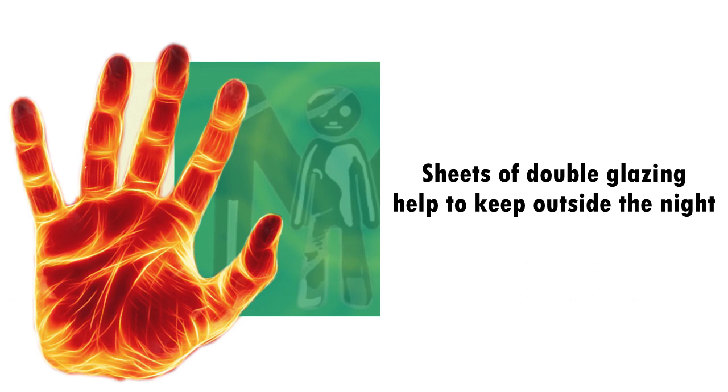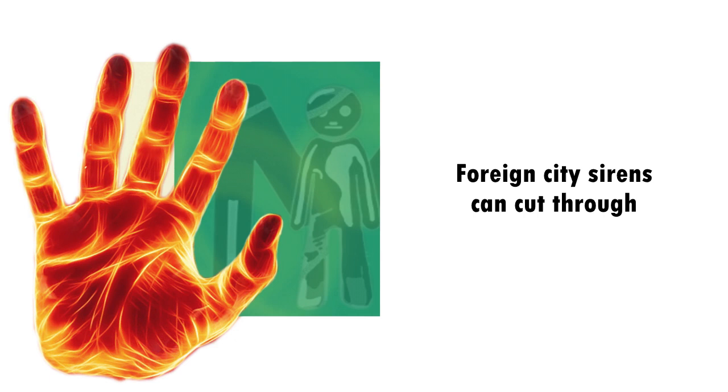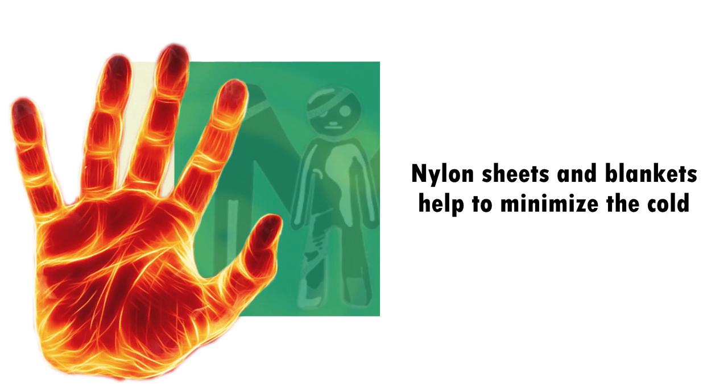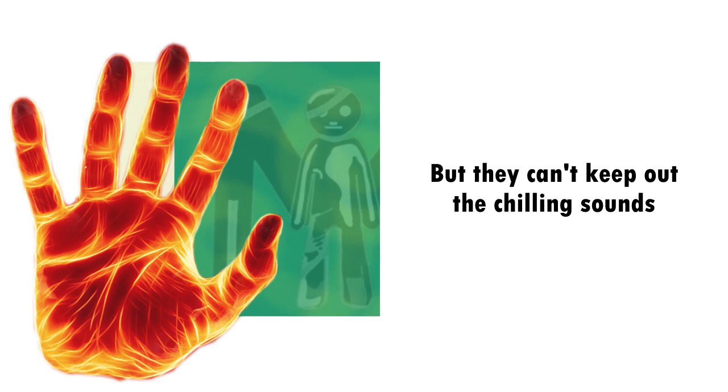Sheets of double glazing help to keep outside the night, for foreign city sirens can't cut through. Sheets and blankets help to minimize the cold, but they can't keep out the chilling sounds.